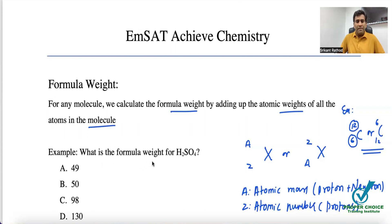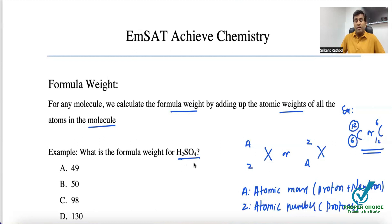A common question is: what is the formula weight of H₂SO₄? H₂SO₄ is sulfuric acid — the name is not necessary to remember, but we need to understand how many different types of elements one molecule of sulfuric acid has. There are three different types: hydrogen, sulfur, and oxygen. There are two hydrogens, one sulfur, and four oxygens that combine together to make sulfuric acid.